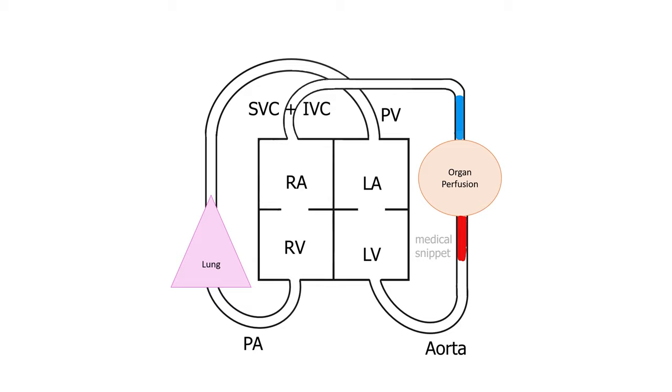Oxygen is extracted by the tissue perfused by the branches of aorta. The deoxygenated blood then again reaches the right atrium via the superior and inferior vena cava. The cycle then repeats.